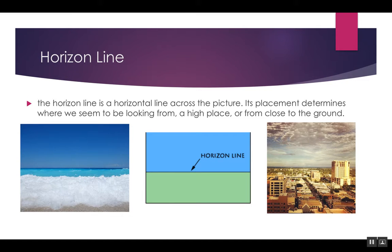The horizon line is the place where the sky meets the earth. If you're lucky enough to live on the ocean, you can see where the sky seems to meet the ocean back there, and it's where everything disappears off into the horizon. There's also a picture of a city and sky, so you can see where the sky would meet the buildings there in the background.